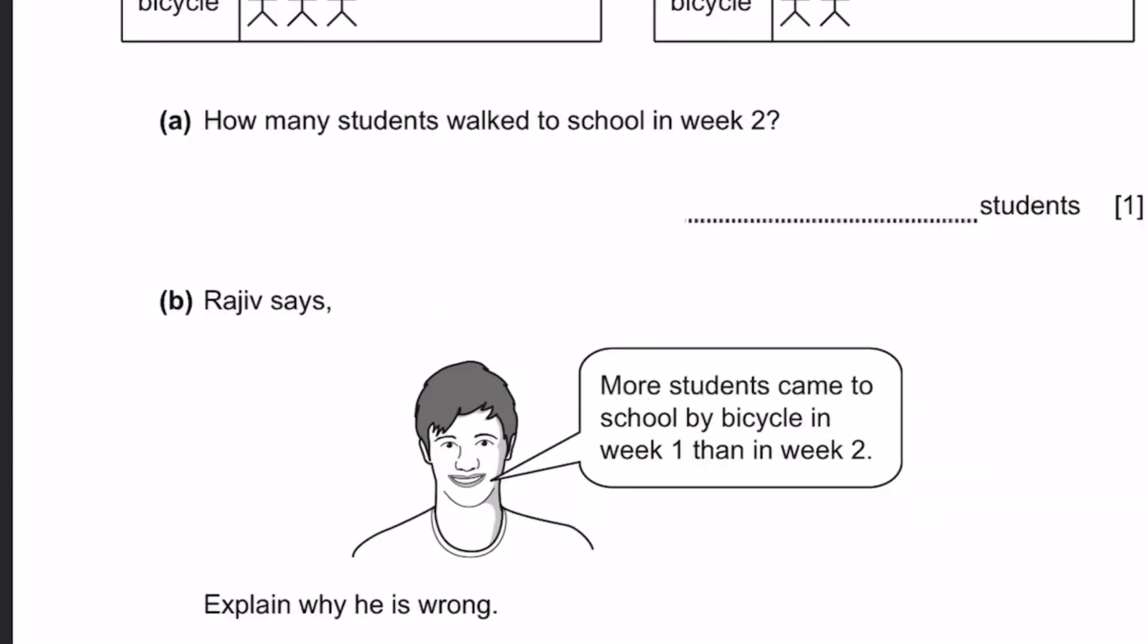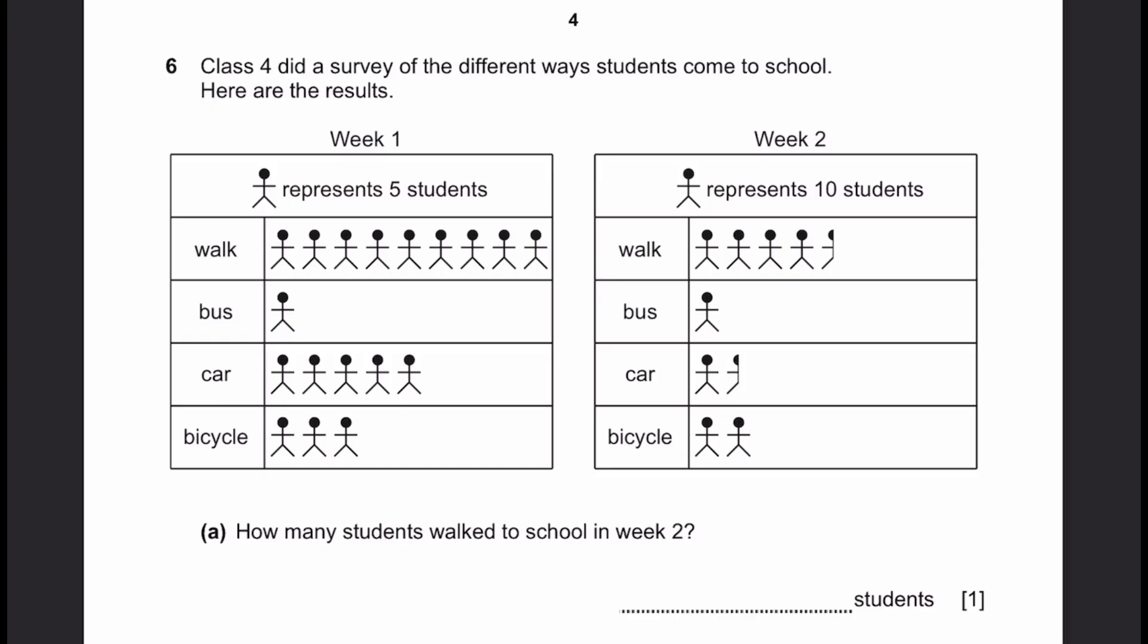Let's go to question 6. Class 4 did a survey of the different ways students come to school. Here are the answers. A. How many students walked to school in week 2? In week 2, the walk is 4 and a half people representation, and one of these represents 10 students. So that'll be 4.5 into 10, which is equal to 45 students. That's the answer.